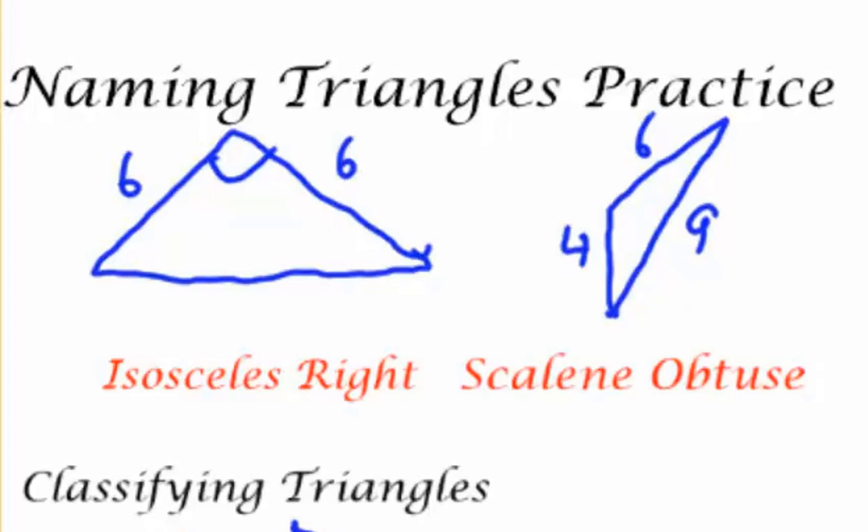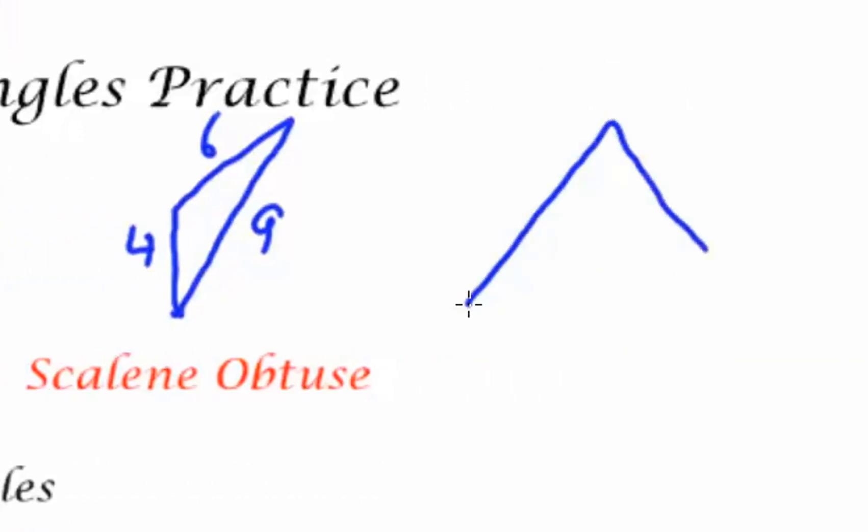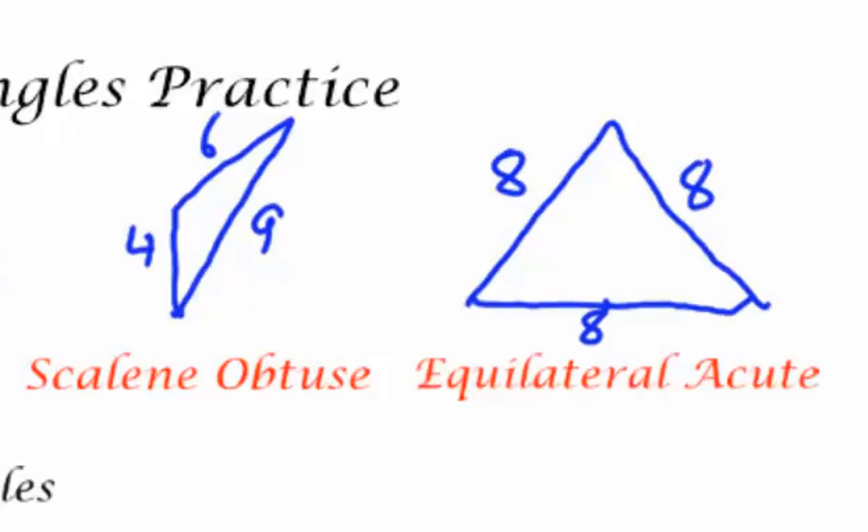With my third triangle, let's go ahead and draw all the sides equal. Just make them all eight. And because all the angles are equal too, they all must be acute. So we have an equilateral acute triangle.